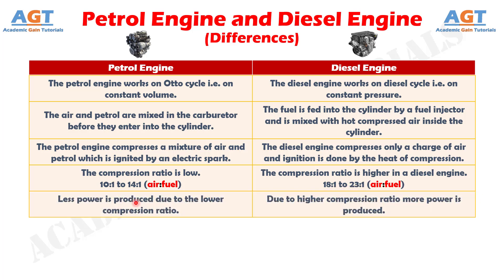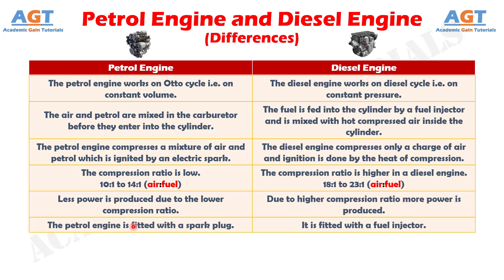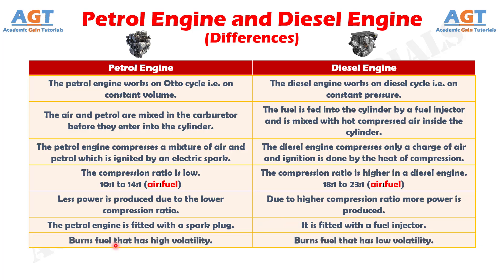Number 5: less power is produced due to the lower compression ratio in a petrol engine, whereas due to the higher compression ratio, more power is produced in a diesel engine. Number 6: the petrol engine is fitted with a spark plug, whereas the diesel engine is fitted with a fuel injector. Number 7: the petrol engine burns fuel that has high volatility, whereas the diesel engine burns fuel that has low volatility.